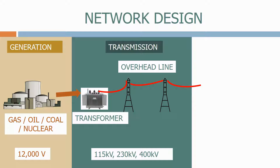Next we have the transmission system. The transmission system takes the electricity from the generating stations when it's made to the cities and industrial centres where the electricity will be used, sometimes over a distance of many hundreds of kilometres.